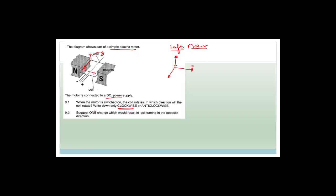Now it says suggest one change that should result in the coil turning in the opposite direction. There are a couple of things that could happen. The first thing we could do is swap the magnets — if we make this the south and that the north, it would cause the force to be in the opposite direction. Or if we swap the direction of the current, then obviously the coil would turn in the opposite direction. They only wanted one answer.